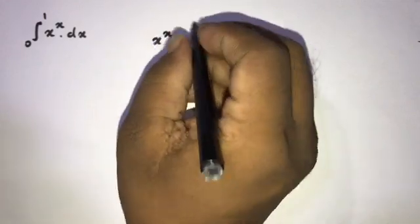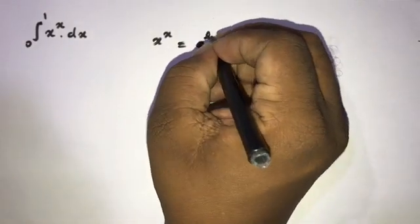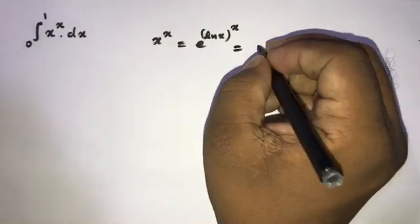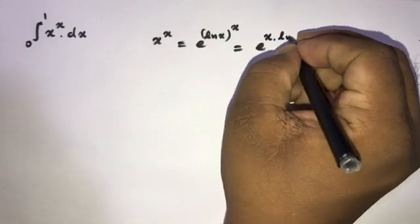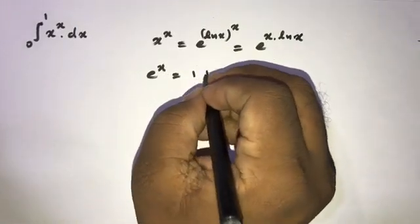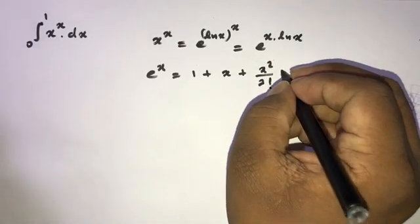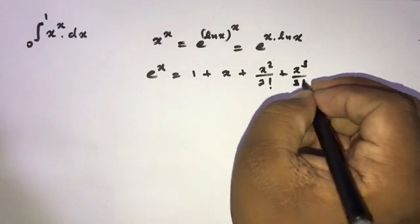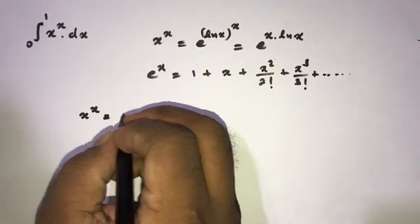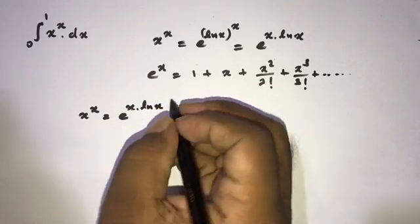First, we take x to the x power. We know we can change the base, so x^x equals e to the x times ln(x). Now we know that e to the x equals 1 plus x plus x squared over 2 factorial plus x cubed over 3 factorial, and so on. So x to the x power equals e to the x times natural log of x.